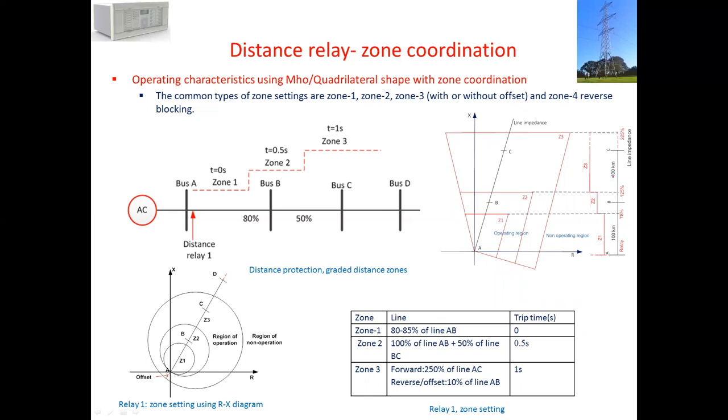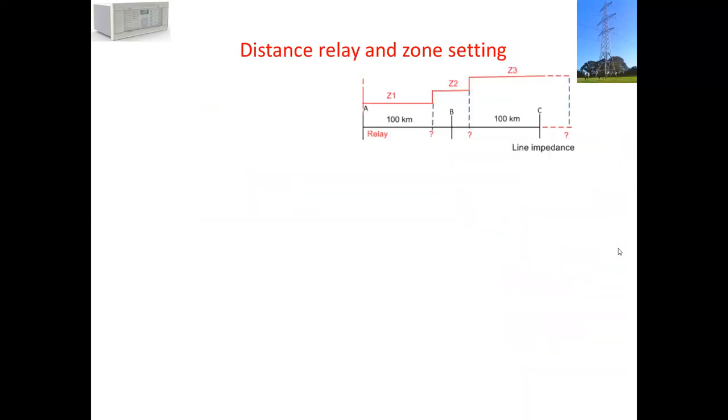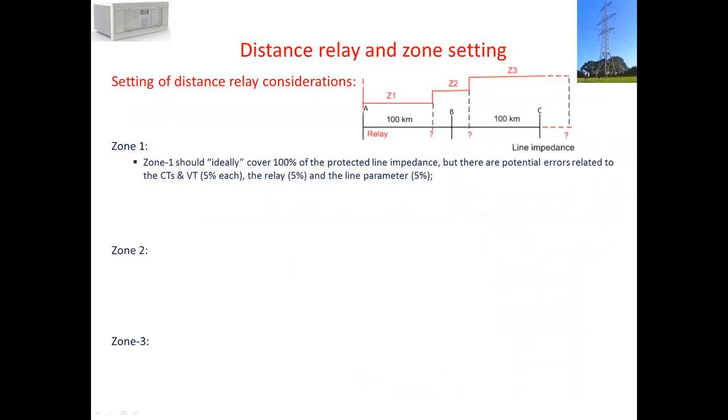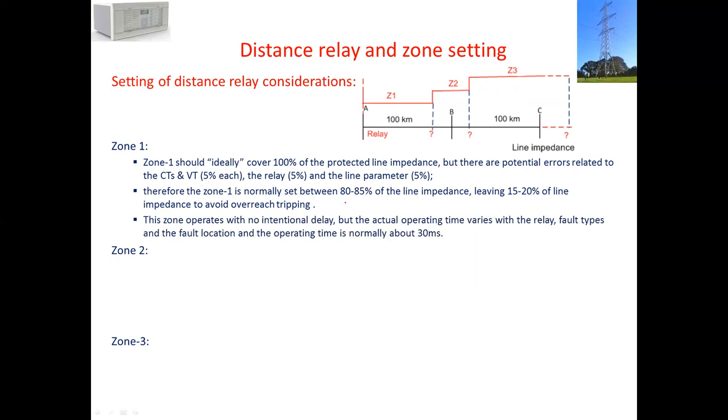The question is, how do we consider zone 1 at what percent, zone 2 at what percent, and zone 3? One of the reasons is that zone 1 should ideally cover 100% of line A to B. But because we have errors caused by CT, VT, relay, or line parameters, all added up to 20%, we can set zone 1 up to 80% to 85% of the relay. For modern relays, we can set up to 85% because they are more accurate. The operating time is 0 second, but actually it is around 30 milliseconds because of relaying time.